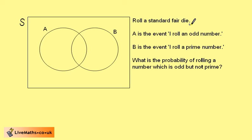We roll a standard fair die. Therefore, our possible outcomes are 1, 2, 3, 4, 5 and 6, and so these must go somewhere within the rectangle.